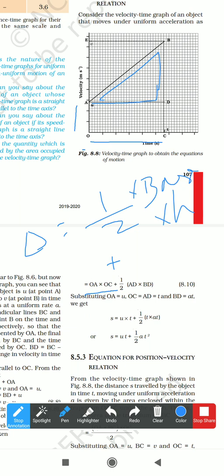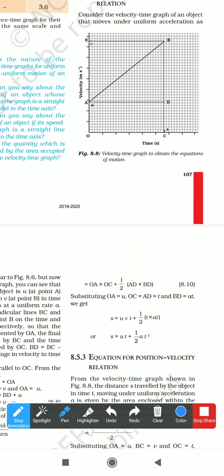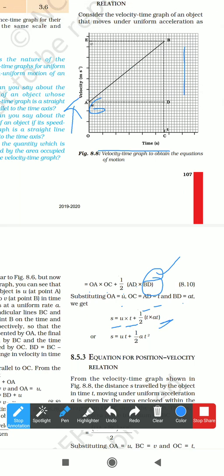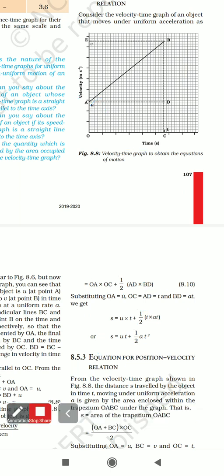The base of the triangle is AD and the height is BD. Substituting: OA = u, OC = t, AD = t, and BD = at (from equation 1). So S = OA × OC + ½ × AD × BD = ut + ½ × t × at = ut + ½at². This is the second equation of motion.